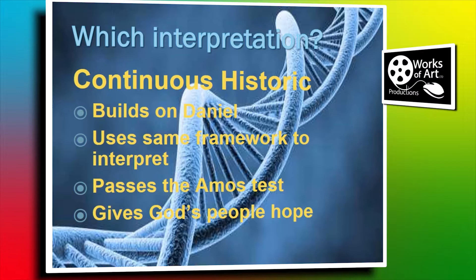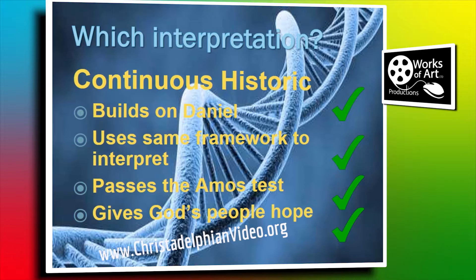The book of Daniel is the outline on the front of the jigsaw board. It tells us what we're supposed to be putting together. The pieces are in Revelation and we've got to look at them and say, how does that fit in? But we've got the master plan already. The other thing with the continuous historic interpretation is it's the only one that passes what I call the Amos test. If you look at other interpretations - everything long time in the past or a long time in the future at some indeterminate time - God has left his people without knowledge. They've got a framework in Daniel and that's it. But the continuous historic has given brethren and sisters through the centuries an understanding of where they are and how they fit into God's plan.